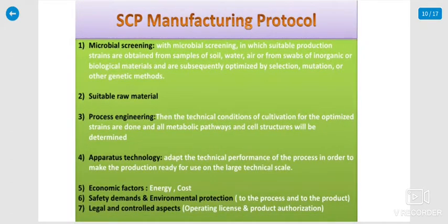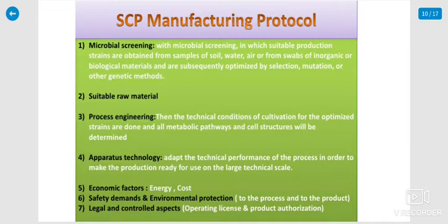SCP production protocol: the first step is microbial screening. The second is selection of suitable raw materials. The third is process engineering technology — technical conditions, cultivation, and staining methods. The fourth is appropriate technology — adopting the technical performance of the process to make production economically viable, considering energy costs, safety, demand, environmental protection, and legal and regulatory aspects.